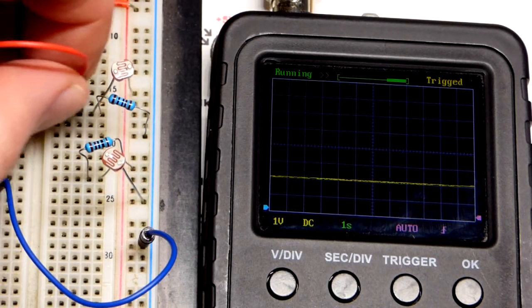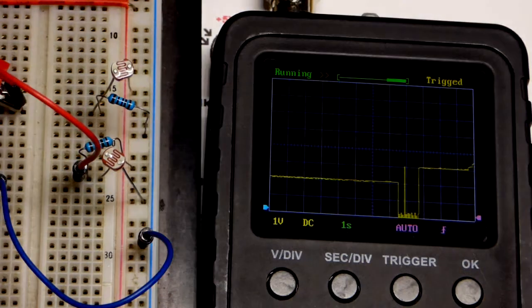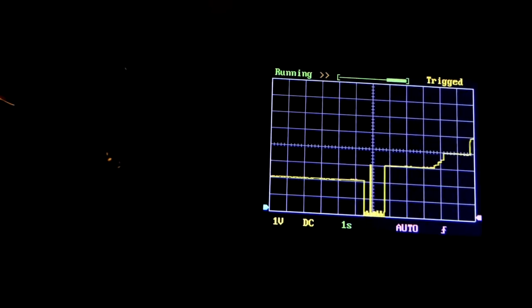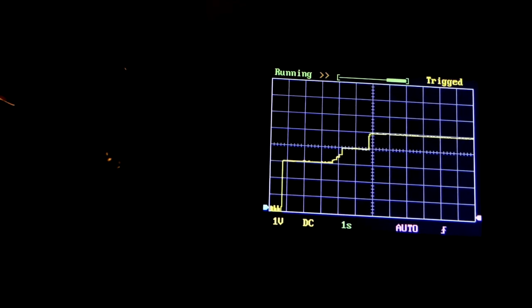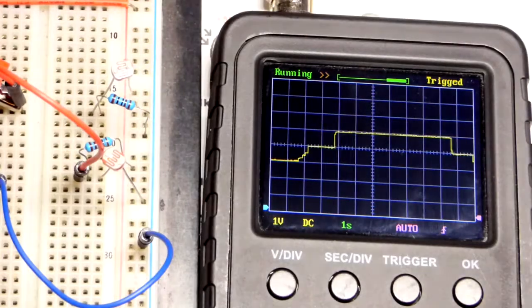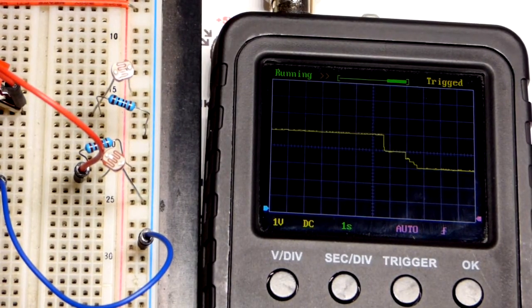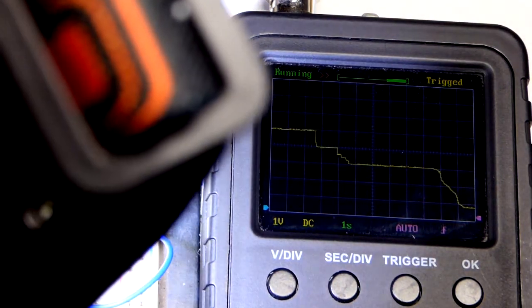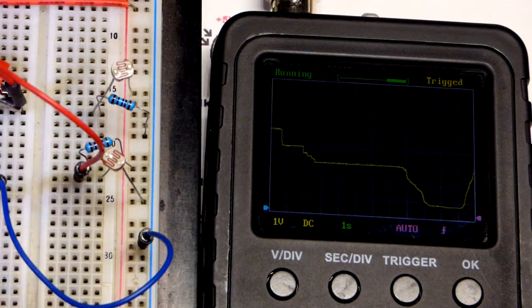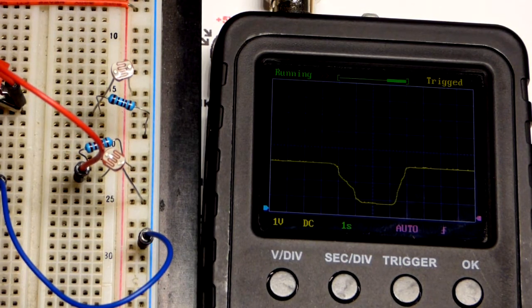Now we will compare that with the light dependent resistor on the low side right there. So let's start off where it's dark. So now it's dark. It's five volts instead of the zero volts when the light dependent resistor was on the other side. And we started increasing light. Now, since the light dependent resistor is on the low side, the brighter it gets, the voltage goes down instead of up right there. So depending on which way you want the voltage to go, depends on which side you put the light dependent resistor.